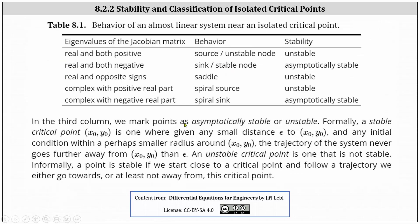In the third column, we mark the points as asymptotically stable or unstable. Formally, a stable critical point (x₀, y₀) is one where, given any small distance epsilon to the critical point (x₀, y₀) and any initial condition within perhaps a smaller radius around (x₀, y₀), the trajectory of the system never goes further away from (x₀, y₀) than epsilon. An unstable critical point is one that is not stable. Informally, a point is stable if we start close to a critical point and follow a trajectory — we either go towards or at least not away from the critical point.